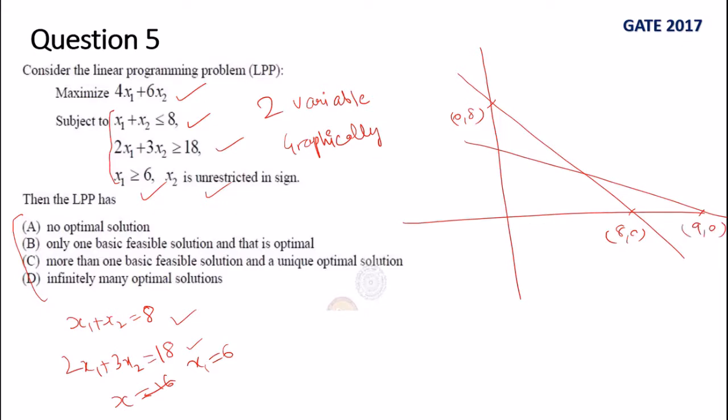The third line I have to draw is x₁ = 6, which is nothing but a vertical line parallel to the y-axis. But for that I need to know the coordinates of this point because only then I'll be able to mark whether x₁ = 6 lies on this side or in this side.